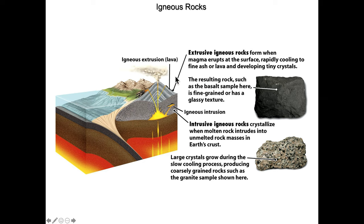In the case of an igneous intrusion, we have an intrusive igneous rock forming over a very long period of time. These intrusive igneous rocks occur when molten material crystallizes, usually at depth, and therefore slowly. The result is large crystals that form during the slow cooling process — lots of time to accumulate the ions you want as a mineral — and the result is a coarsely grained rock such as the granite sample shown here.